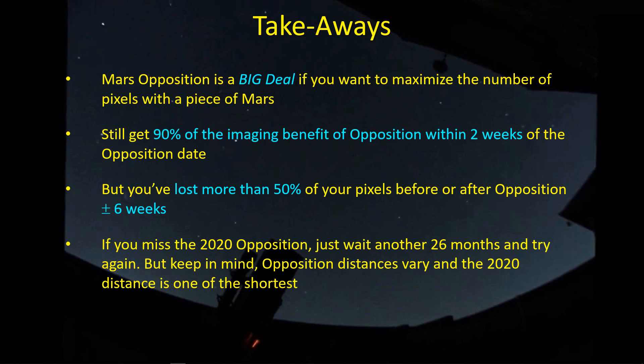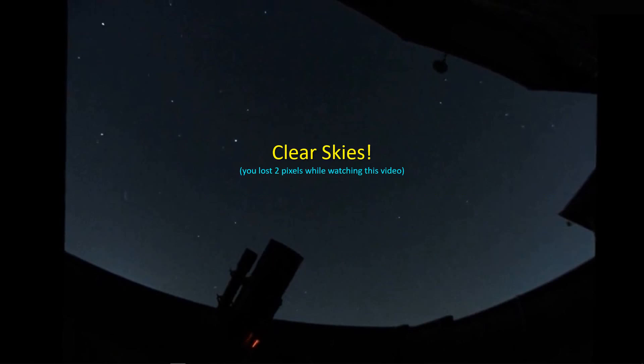Keep in mind, opposition distances do vary, and the 2020 distance is maybe not the shortest, but it's pretty short — it's a good opposition distance. So for you planetary hunters out there, get out there with your high magnification telescopes and fill up those pixels because they're falling off pretty quick. That's all I've got — just a little quick head on Mars. Clear skies. Oh, by the way, in the time you were watching this video, you just lost two pixels. See ya.